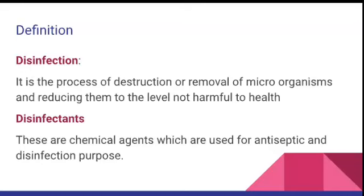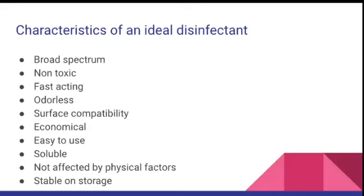What are disinfectants? These are chemical agents used for antiseptic and disinfectant purposes. What are the characteristics of an ideal disinfectant? When a chemical follows all these characteristics, we accept it as an excellent disinfectant. First is broad spectrum antimicrobial activity — it should kill most of the microbes on the surface. Non-toxic — it should have no toxic effects, as we use it on surfaces as well as on the skin. Fast acting — it should give very fast killing of microbes.